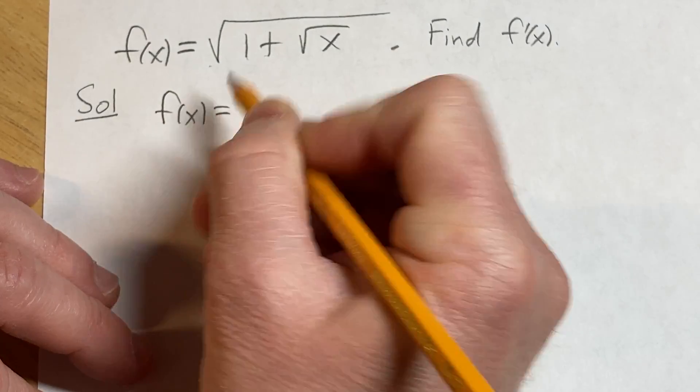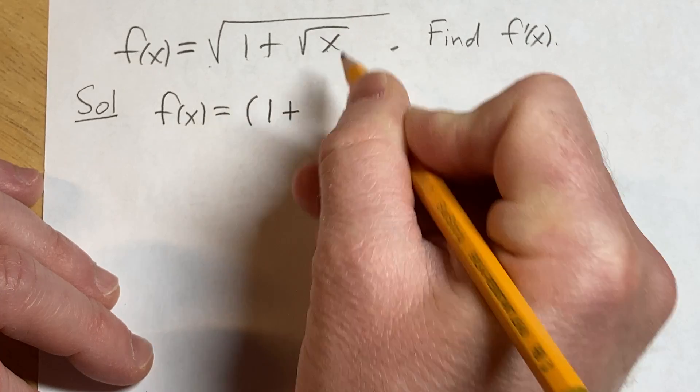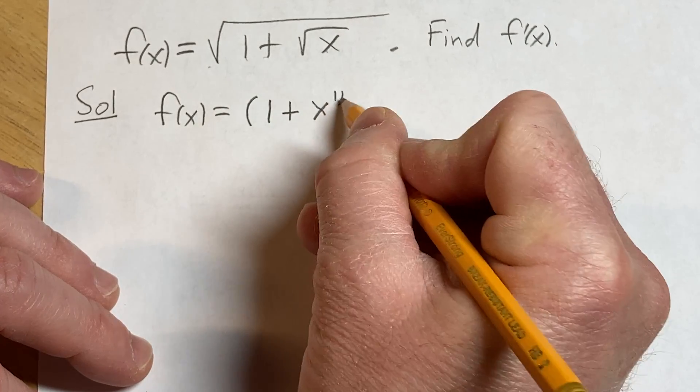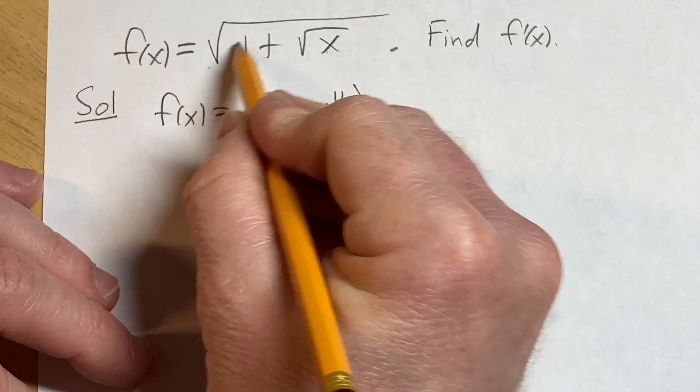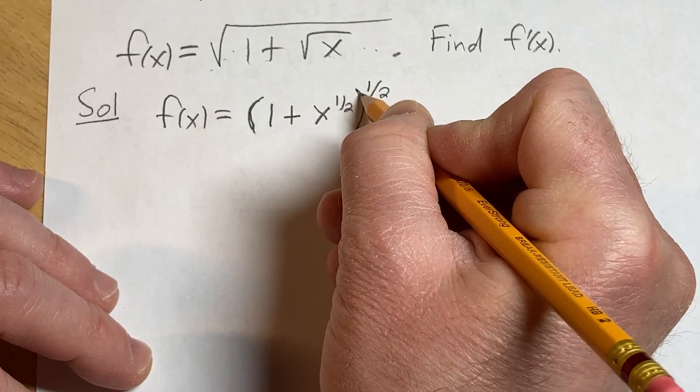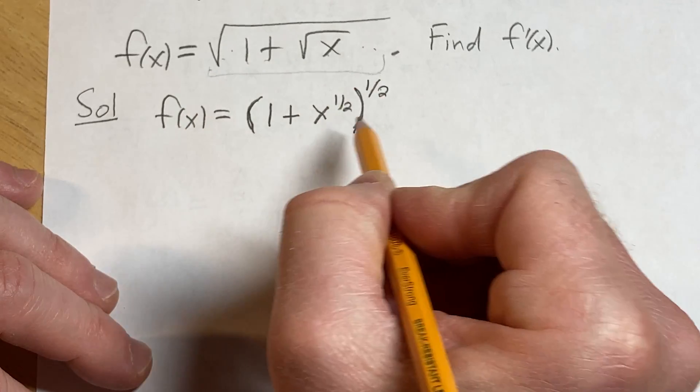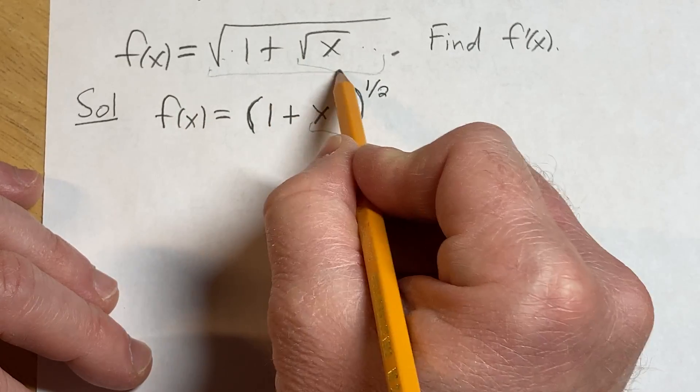So this is f of x equals parenthesis 1 plus, this square root is x to the 1 half, parenthesis, and this outer square root is also now a 1 half power like that. So this 1 half corresponds to this outside square root and this one here is the inner one.